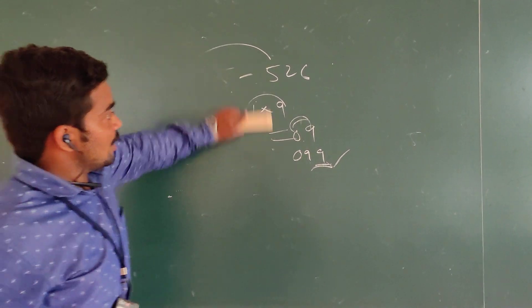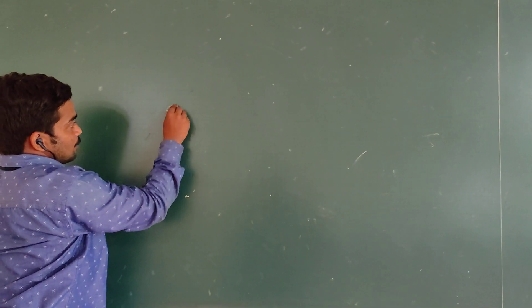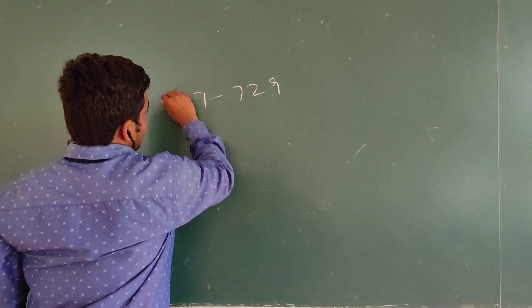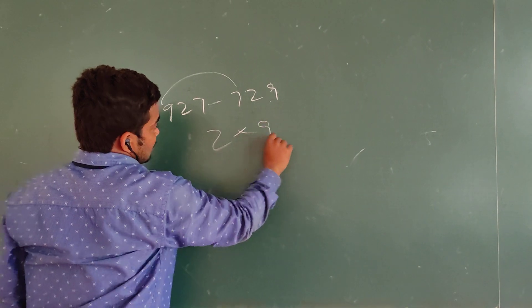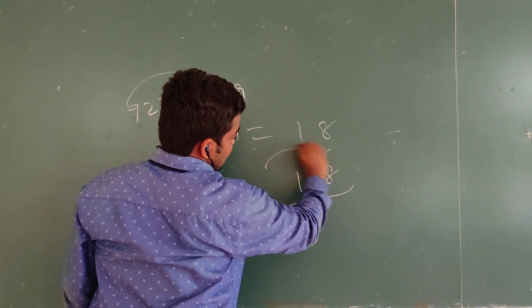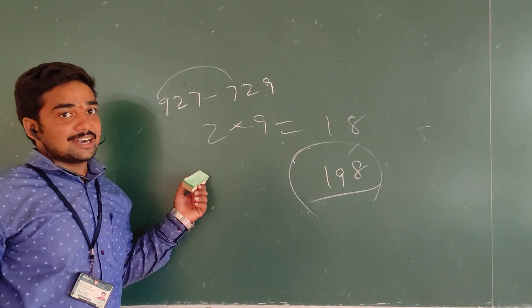Let me tell you another example. Now, our number is 927. Now, reverse the number: 729. 9 minus 7 is 2, multiplied with 9 is 18. Write 9 in between: 1, 9, 8—that's 198. If you solve it with a calculator also, you will get this number.